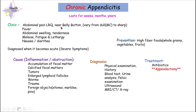We have abdominal pain in the lower right quadrant, also near the belly button. The intensity of the pain can vary from dull to sharp, but in most cases the patients suffer from dull abdominal pain. That's why this condition goes undiagnosed for a longer period of time.